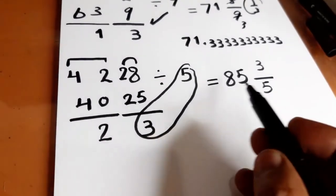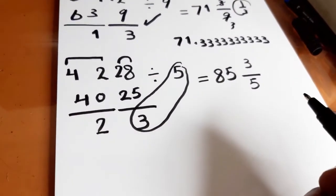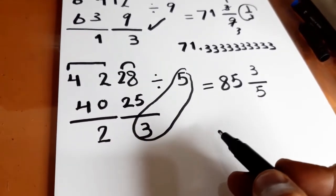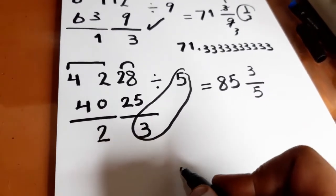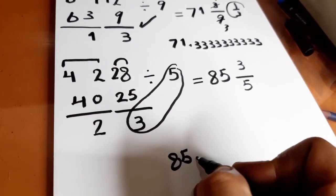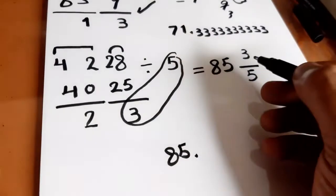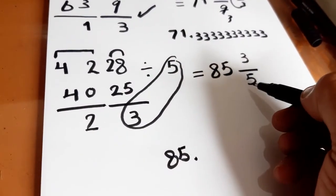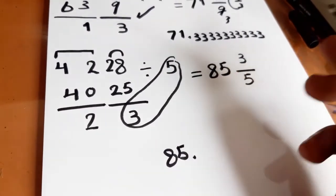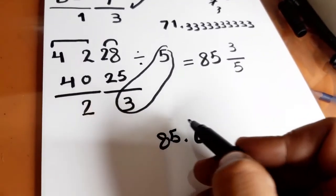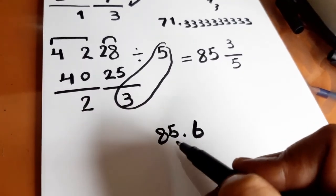But the answer does not appear like this on the calculator. I will teach you a method to write the answer as it appears on the calculator. We will write 85 as it is in this way. Then 3/5 will be written as 0.6. So the answer is 85.6.